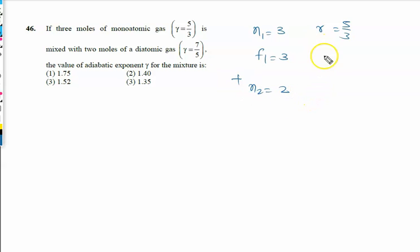of diatomic gas. Diatomic gas you have got gamma seven by five, but we know degree of freedom for the diatomic gas is known as five. So we will use the formula: degree of freedom for the mixture is